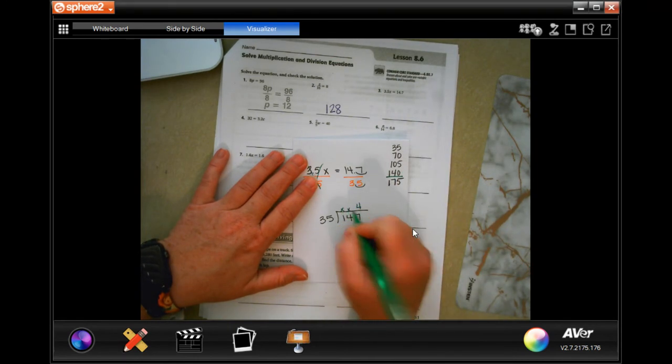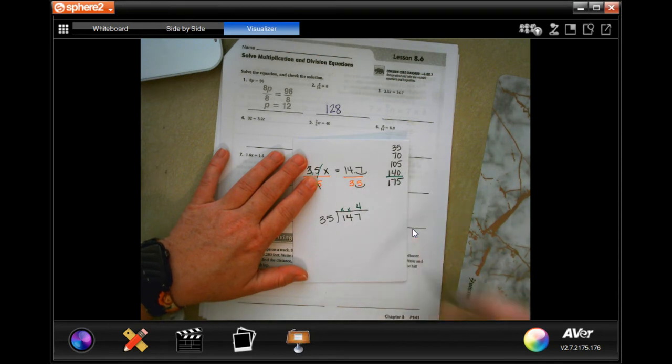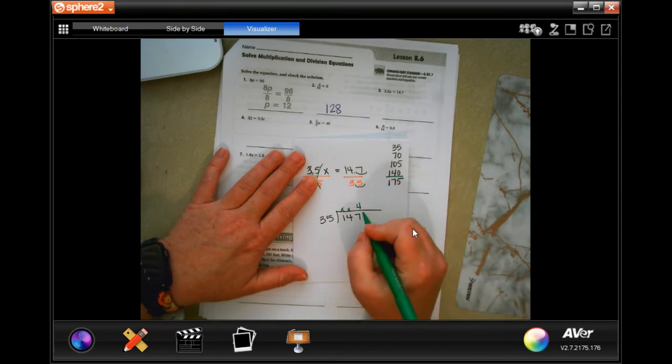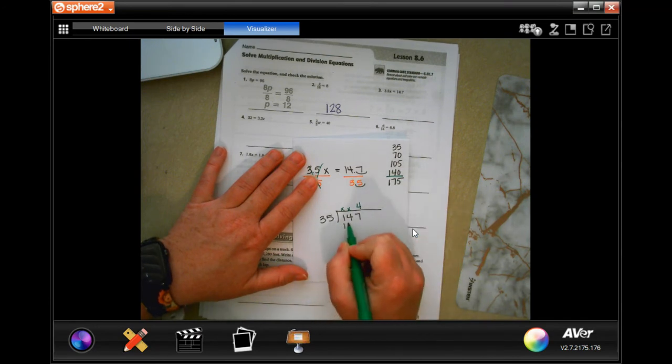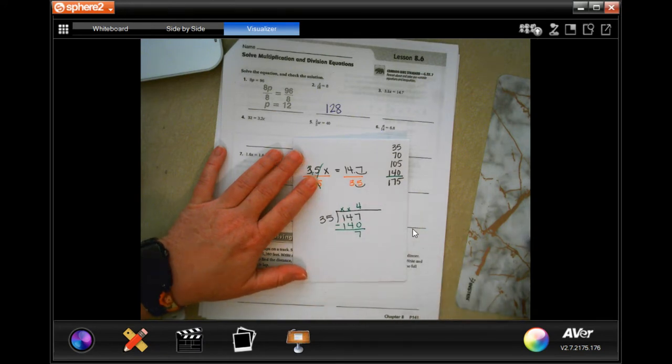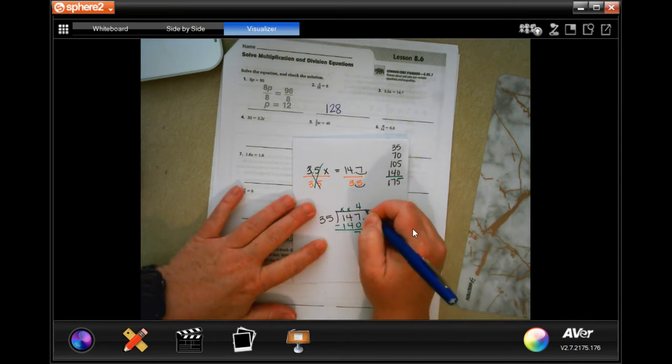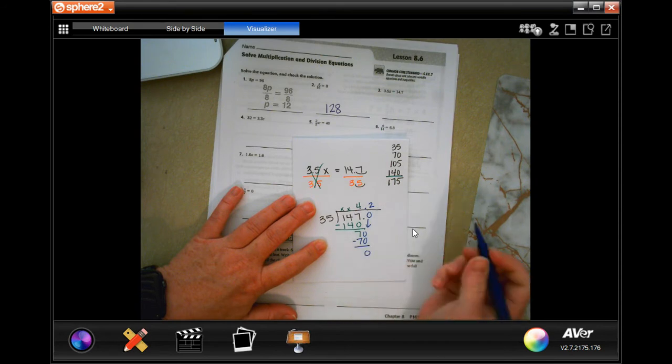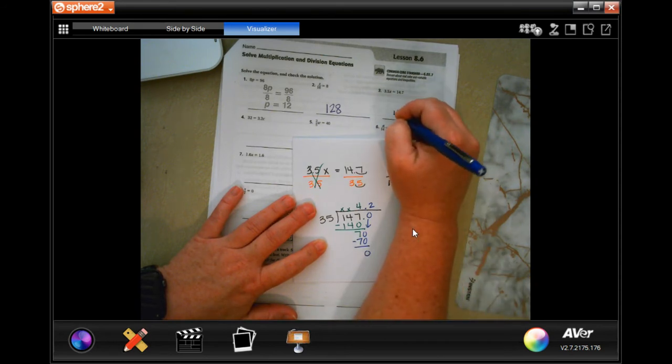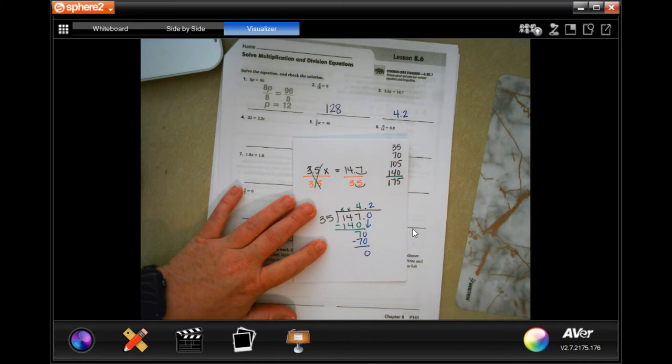It looks like the closest I'm going to get is going to be 140. That's 4 times. It's not going to go into 1 or 14. So, I am going to extend that a little bit. It looks like we're going to have to add a decimal. 4 times 35 is 140. Subtract, I'm going to get 7. Now, I'm going to put a decimal and bring it up. I'm going to put a 0 and bring it down. 35 goes into 70, 2 times, 2 times 35 is 70. Subtract is 0. So, your answer is 4.2.